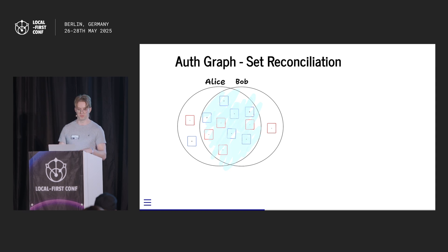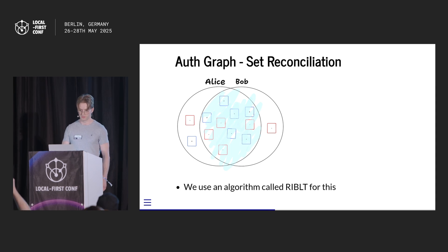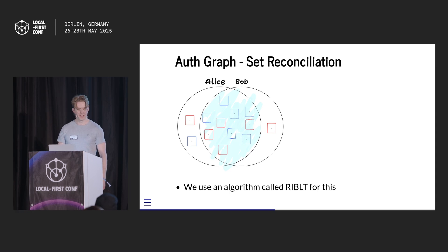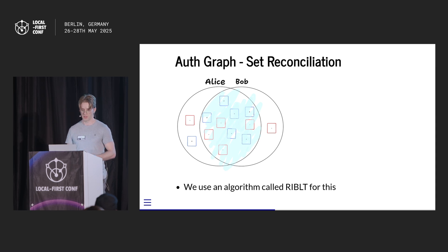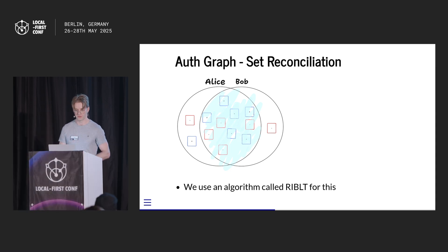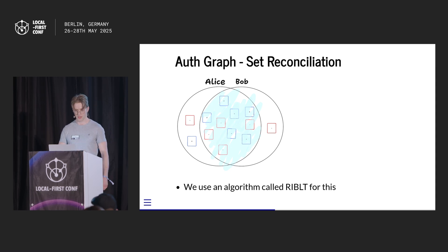We have two nodes, Alice and Bob, with mostly the same ops, and they want to synchronize the difference. We use an algorithm called RIBLT — Rateless Invertible Bloom Filter Lookup Tables. It has a really nice property: the amount of information you have to send to synchronize is 1.3 to 1.7 times the size of the things that are out of sync. So for the aeroplane problem, that's amazing — we're only sending the data that's different. It also allows us to tune the number of network round trips based on network conditions, and it's not built into the data structure.